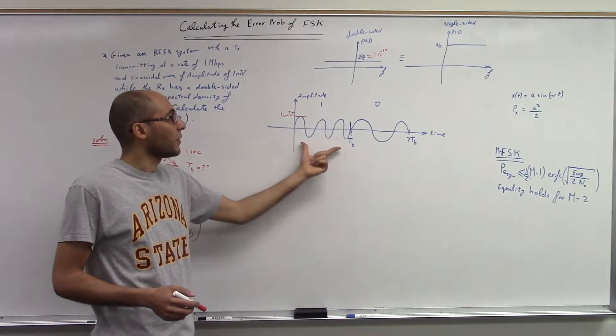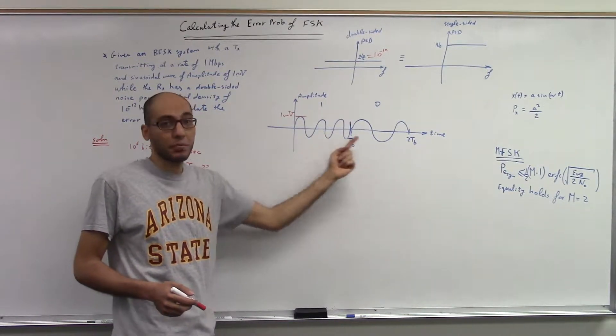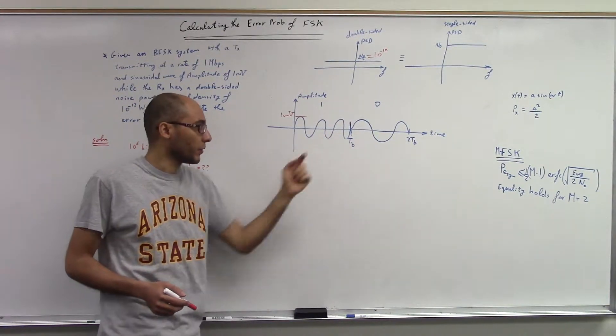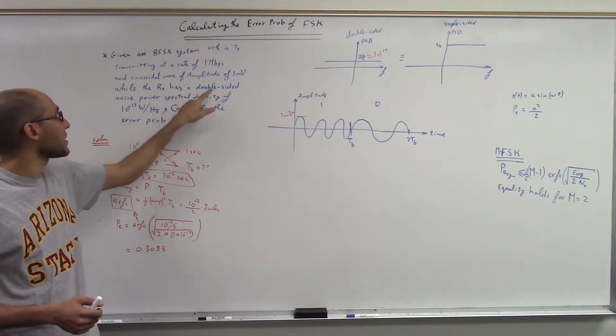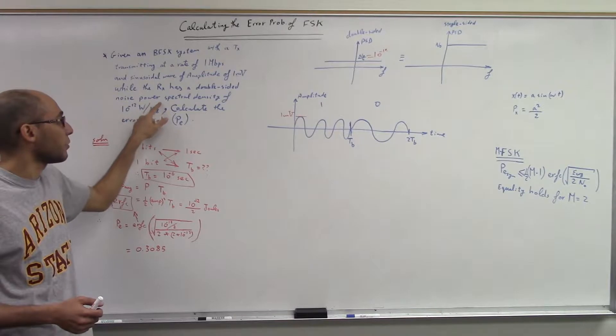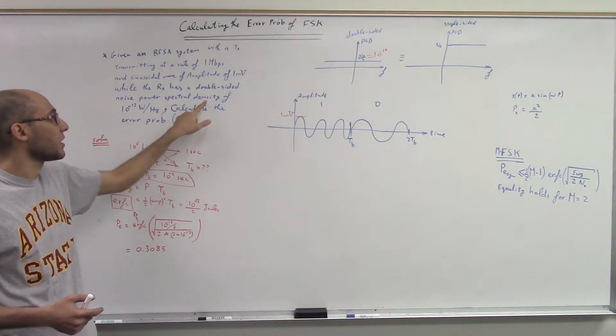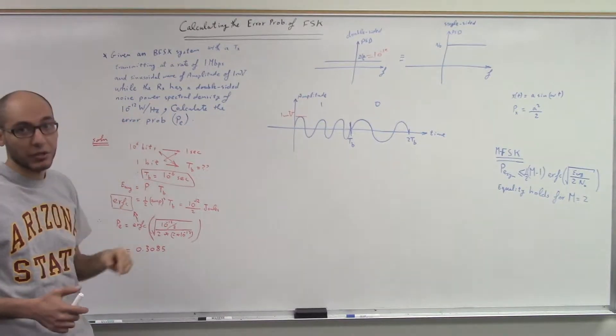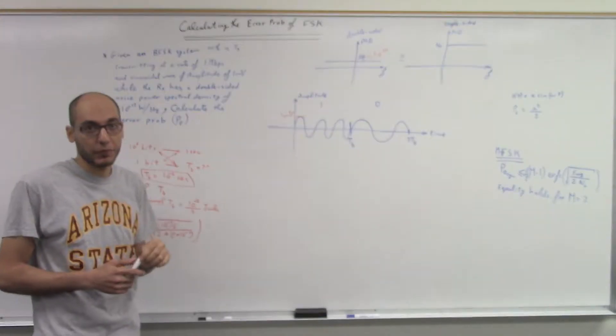And remember that the difference between 1 and 0 is not in the amplitude, but in the frequency. So at the receiver, I have a double-sided noise power spectral density. The double-sided spectral density of the noise is equal to 10 power negative 12 watts per hertz, which equals 10 power negative 12 joules.